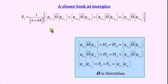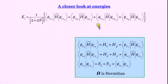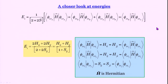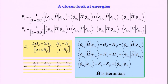The first integral, phi_1s_a H-hat phi_1s_a, is H_ii. The second, involving 1s_b in both bra and ket, is also H_ii. The last two cross terms are H_ij, since we have A in the bra and B in the ket or vice versa. After cancellation, E_1 becomes (H_ii + H_ij) divided by (1 + S_ij). For E_2, the same expression holds but with a minus sign instead of plus. Please work it out yourself to verify.